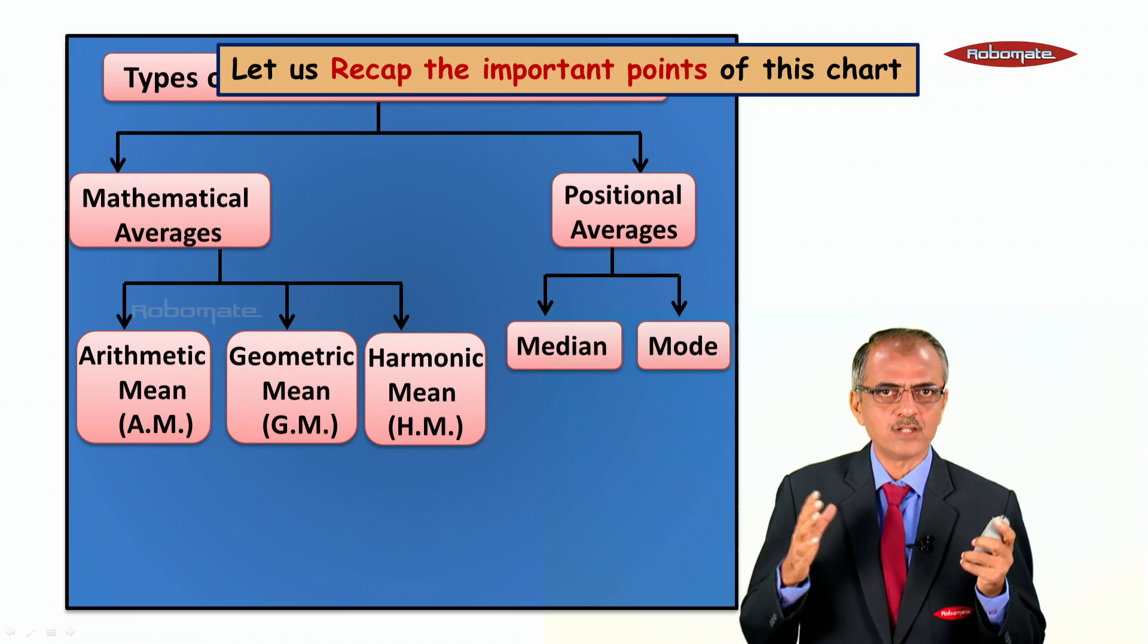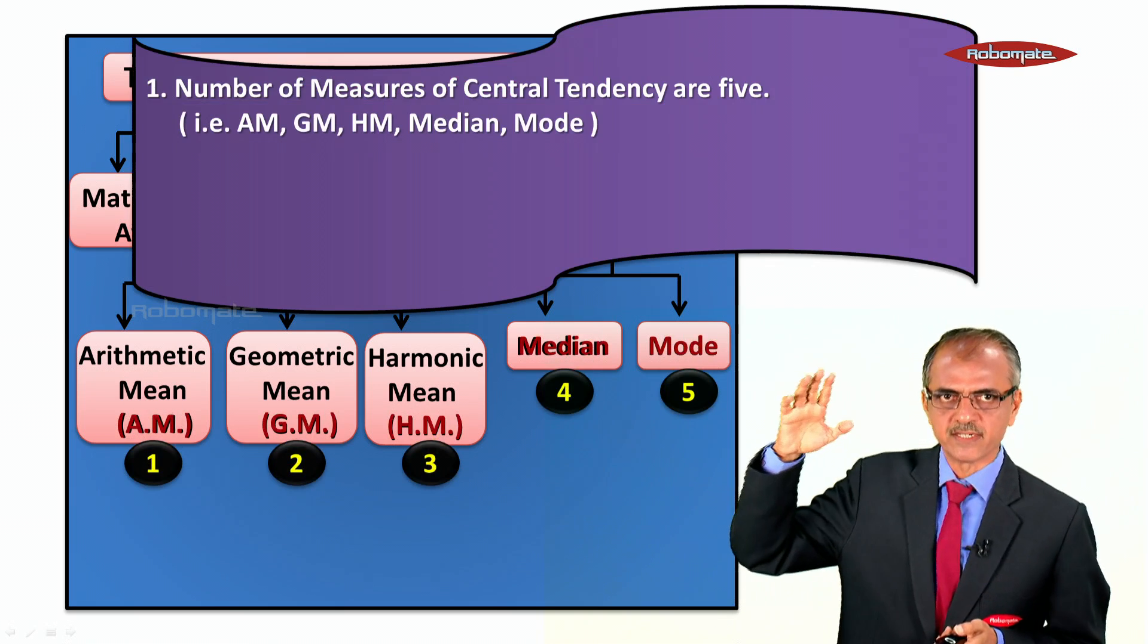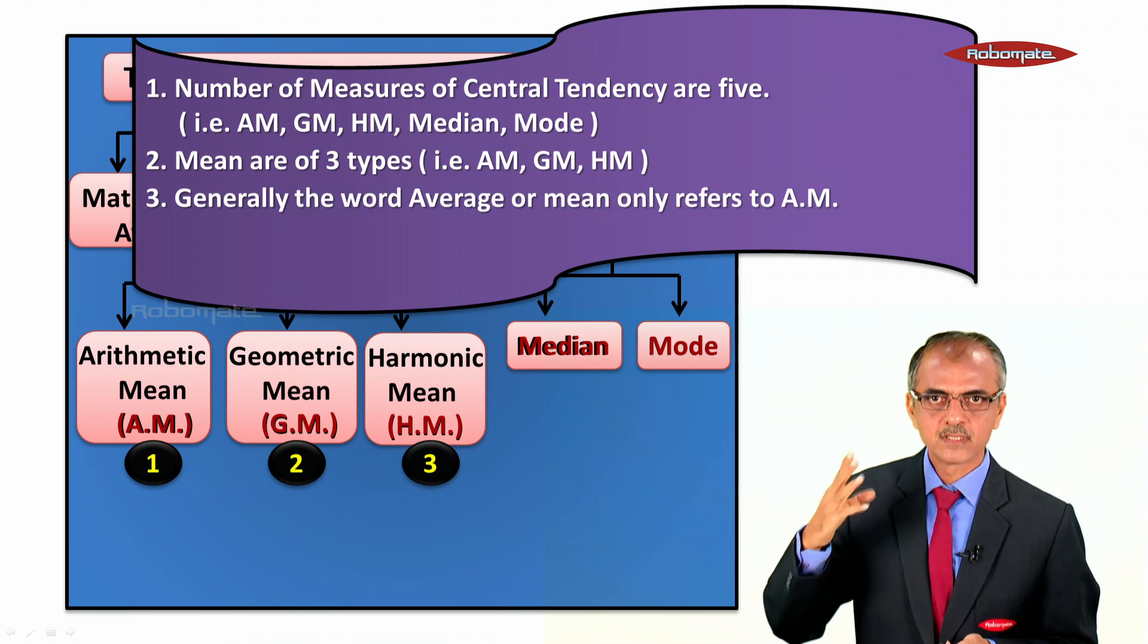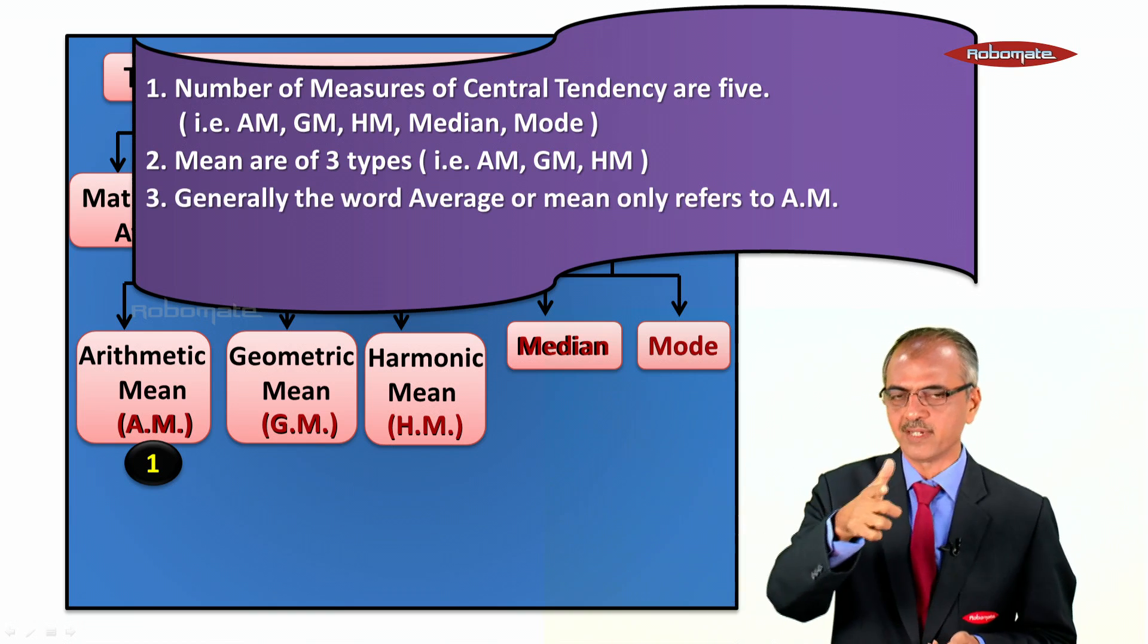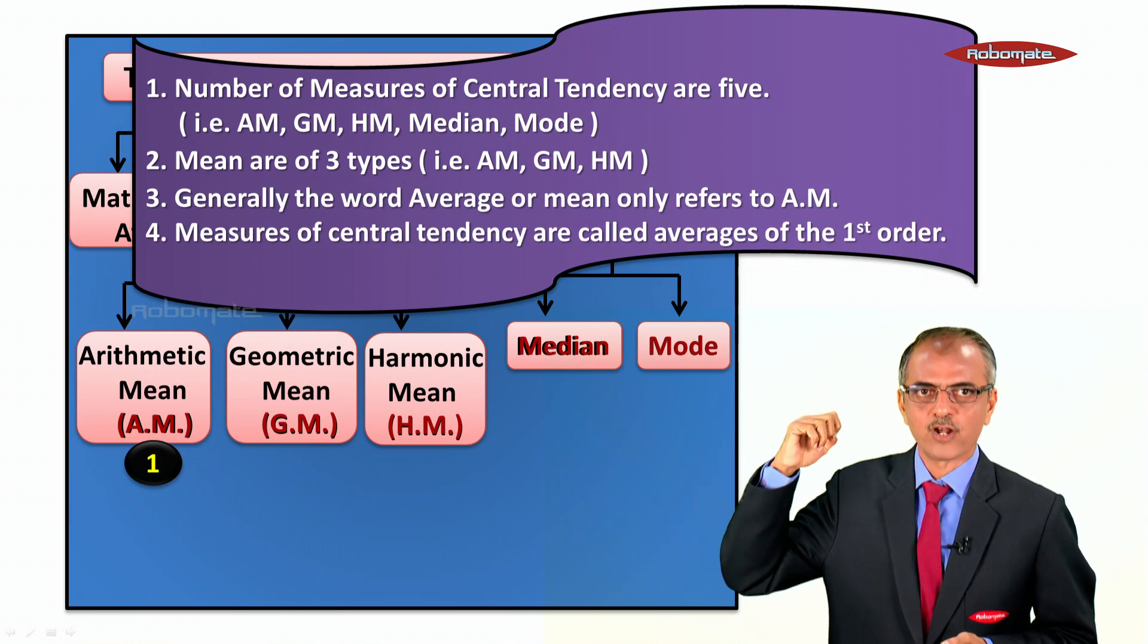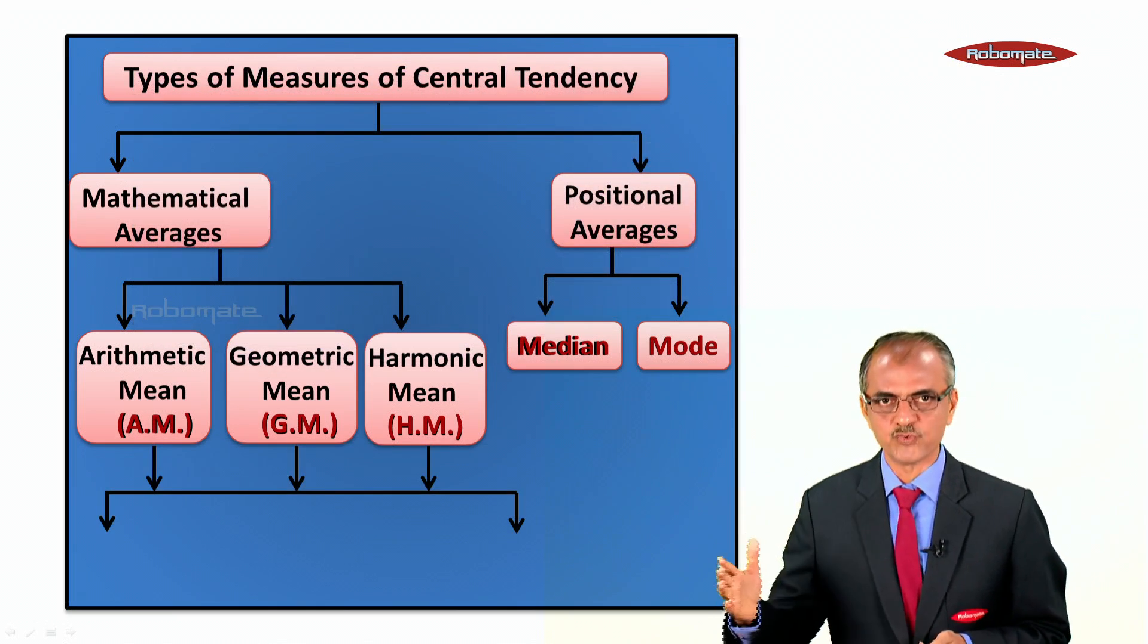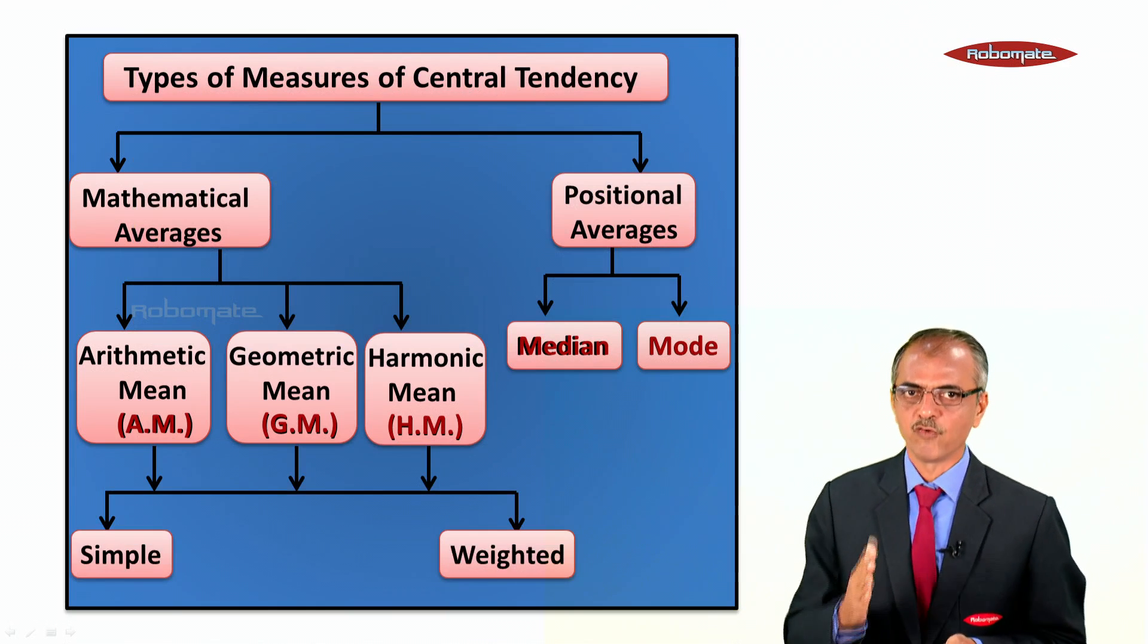Let us recap the important points of this chart. First, the number of measures of central tendency are five. Second, means are of three types. Third, generally the word average or mean only refers to arithmetic mean. Fourth, measures of central tendency are called averages of the first order. Fifth, we can divide AM, GM, and HM into two types: simple and weighted.